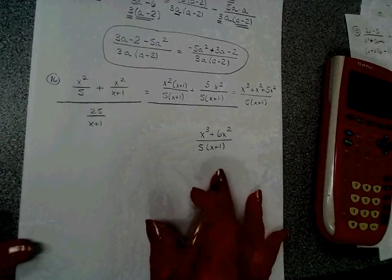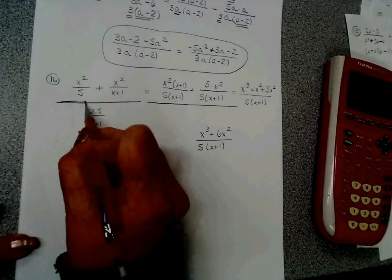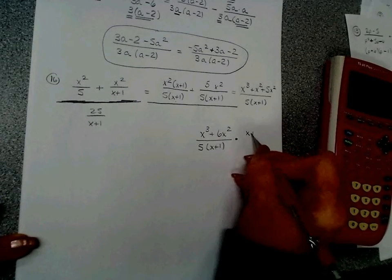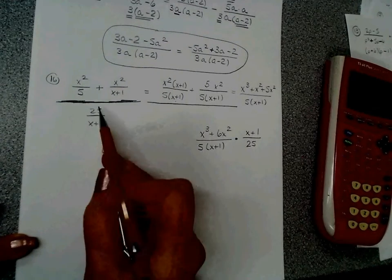Now, I'm going to do same. This is my numerator. Change, change that into a times, and I'm going to flip: x plus 1 over 25. I flip the denominator.